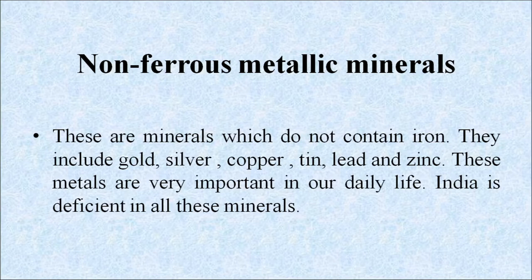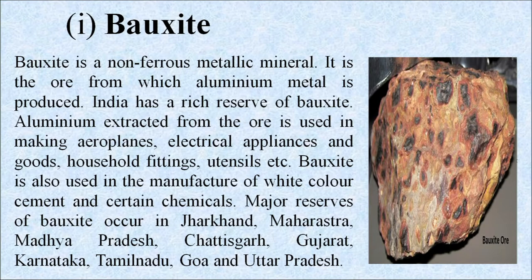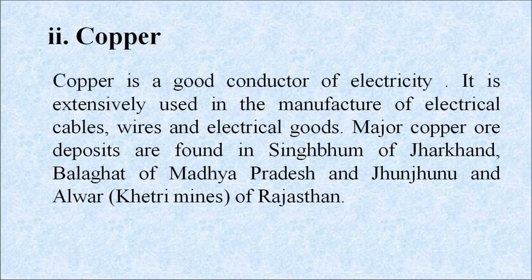Non-ferrous metallic minerals do not contain iron and include gold, silver, copper, tin, zinc and lead. These metals are very important in our daily life, but India is deficient in all these minerals. Bauxite is a non-ferrous metallic mineral and is the ore from which aluminum metal is produced. India has a rich reserve of bauxite. Aluminum is used in making aeroplanes, electric appliances, household fittings and utensils, and also in the manufacture of white cement and certain chemicals. Major reserves of bauxite occur in Jharkhand, Maharashtra, Madhya Pradesh, Chhattisgarh, Gujarat, Karnataka, Tamil Nadu, Goa and Uttar Pradesh. Copper is a good conductor of electricity and is extensively used in the manufacture of electrical cables, wires and electrical goods. Major copper ore deposits are found in Singhbhum of Jharkhand, Balaghat of Madhya Pradesh, and Jhunjhunu and Alwar of Rajasthan.